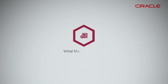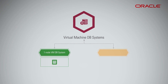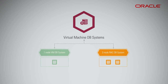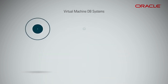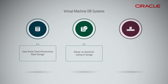There are two types of DB systems on virtual machines. A one-node VMDB system that consists of one virtual machine. A two-node RAC DB system consists of two virtual machines forming a highly available cluster database system. A virtual machine database system uses Oracle Cloud Infrastructure block storage, allows no-downtime scaling of storage using the console, REST APIs, CLI, or SDKs.